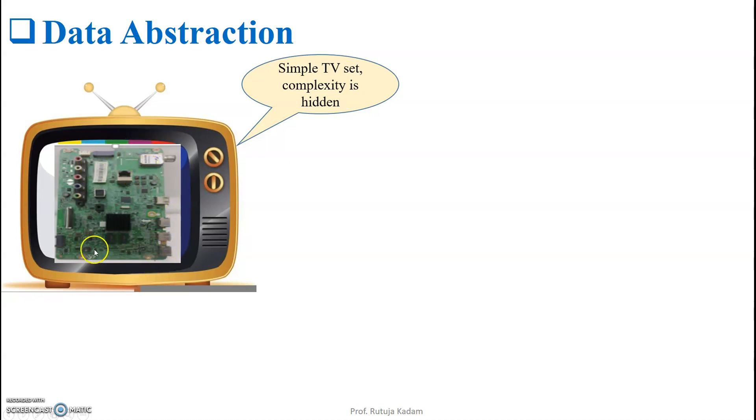But inside the TV there are various components. Here if you are able to see, there is a motherboard, various USB slots, capacitors, registers, a lot of wires going in and out, buses, and various slots. This complexity is hidden from the users who are watching it, and that process is called data abstraction.